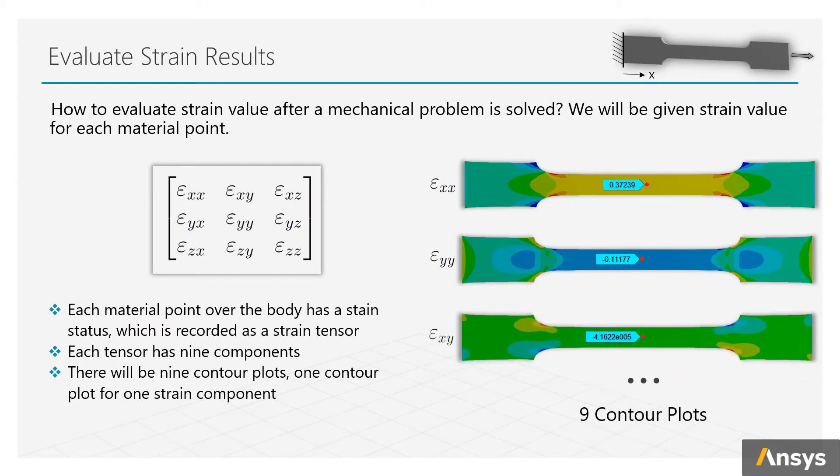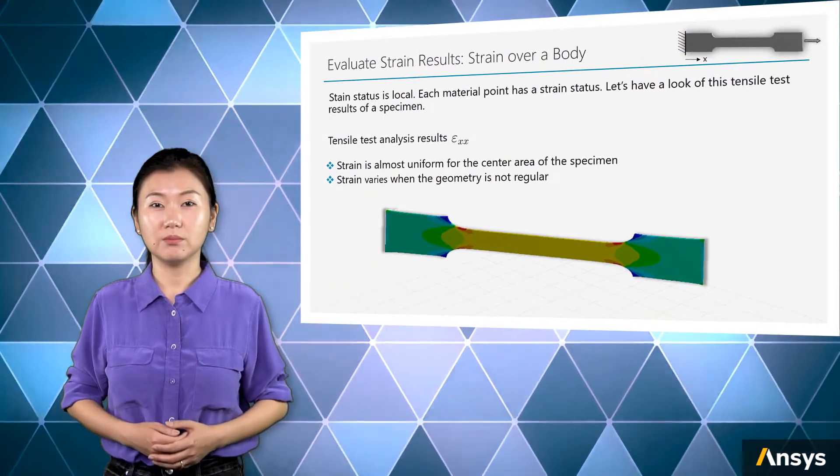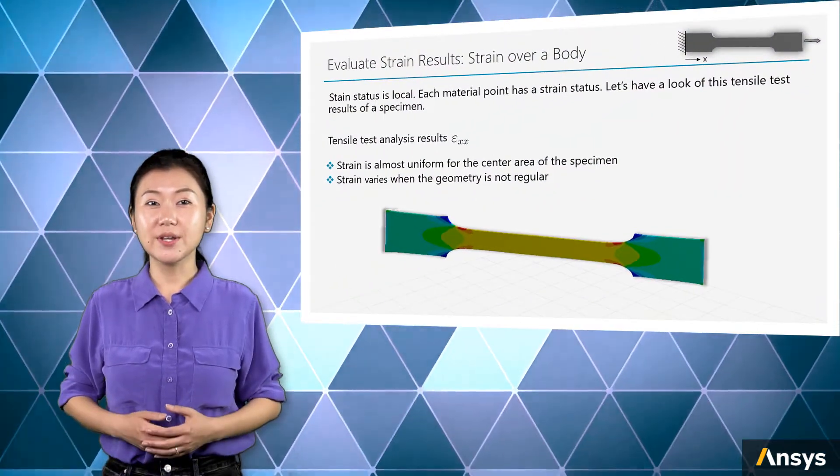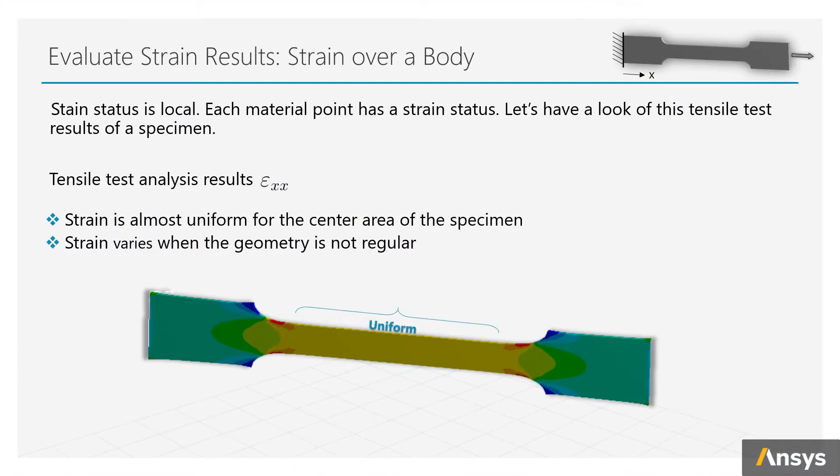Let's plot the normal strain in tension direction for the uniaxial tensor test problem. We can see that strain is almost uniform for the middle area of the specimen.